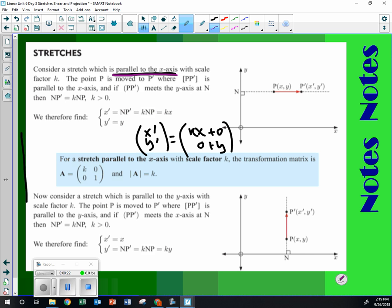The y is the same. You get kx plus 0, 0 plus y. And so what helps is kxy, right? But this is helpful because now you can see that this is k, 0, 0, 1. Determinant was k.